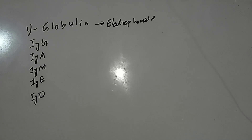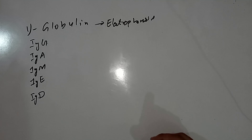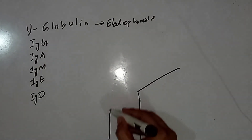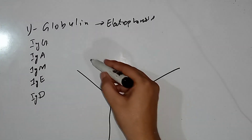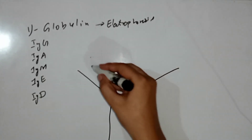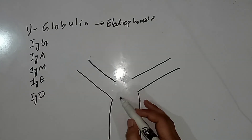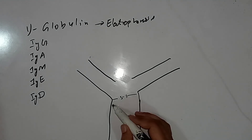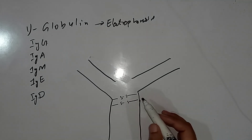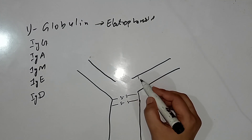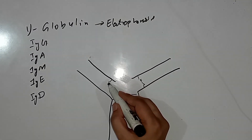We should know the basic structure of immunoglobulin, which is sometimes asked in exams. Immunoglobulins have two heavy chains and two light chains. These two heavy chains are joined by inter-chain disulfide bonds, and the heavy and light chains are also joined by inter-chain disulfide bonds.